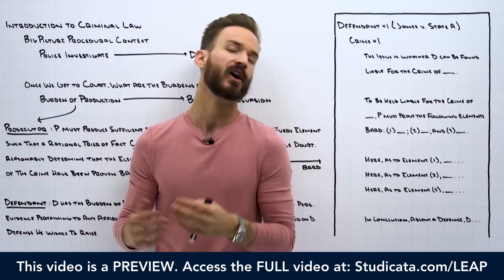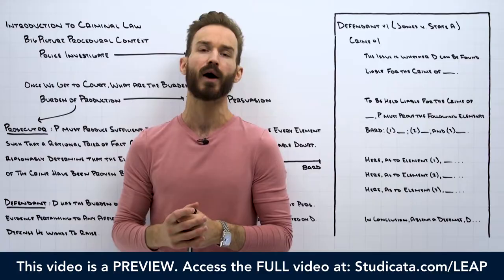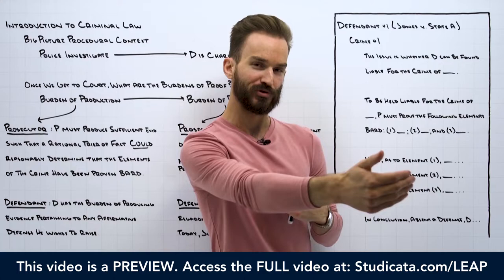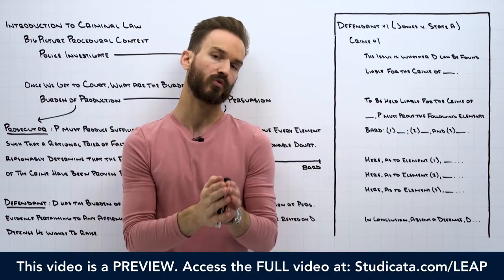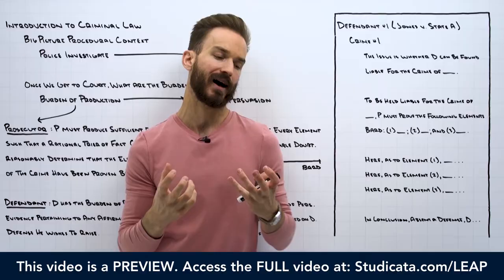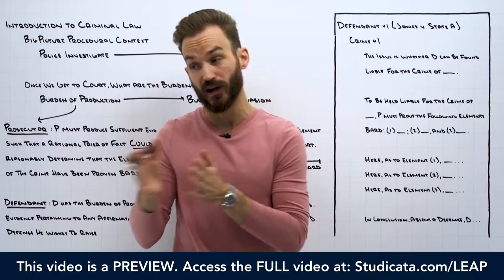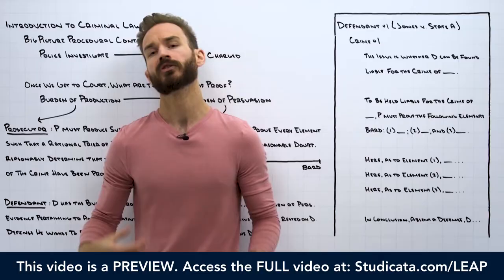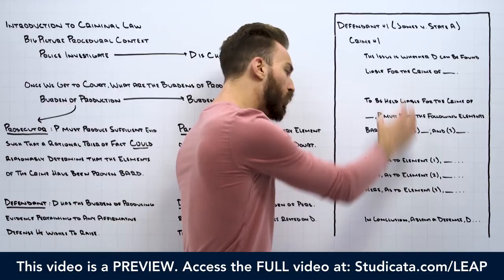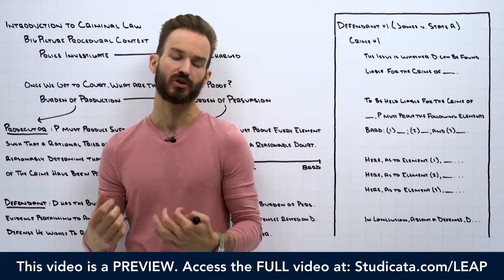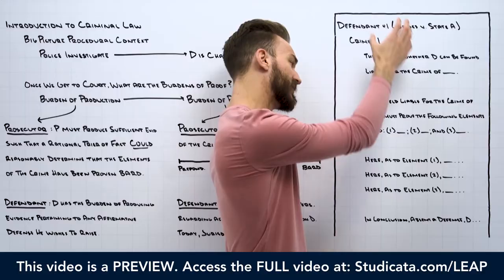We're also going to talk about all the property offenses — larceny, embezzlement, false pretenses, receipt of stolen property — as we work through this course. Really, the ultimate issue when discussing all of these crimes is whether the defendant can be found liable. At its core, each crime consists of different elements, and to determine criminal liability, all we're going to do is apply those elements to the fact pattern to come to conclusions as to whether or not the defendant can be found liable.